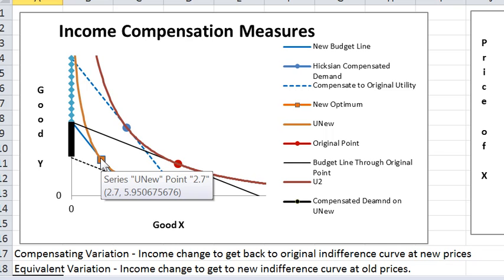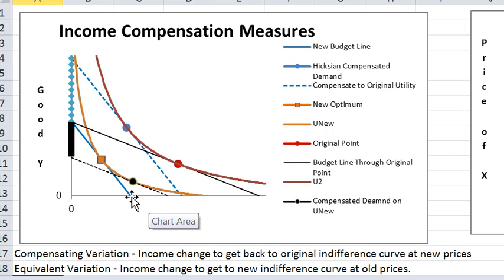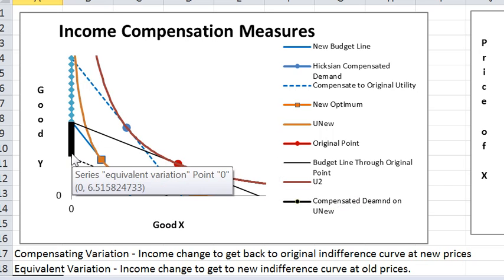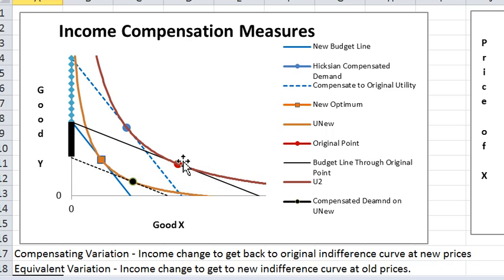Here is the new choice point after the price of x has increased without any compensation. And this is a point on the new indifference curve that has the same relative price as the original point. So going from here to here is like a decrease in income at the new prices, and this black dark bar, that height represents the equivalent variation. That's the amount of income you can take away from the consumer to get them to the new indifference curve at the original prices.